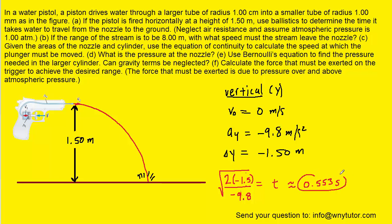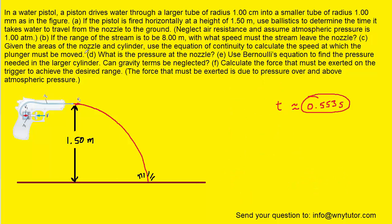So 0.553 seconds is the correct answer to part A. Now on to part B, which tells us that the range of the stream is 8 meters — meaning the horizontal distance the water has traveled. We are asked to find the speed with which the stream leaves the nozzle, which is essentially the initial horizontal speed of the water.